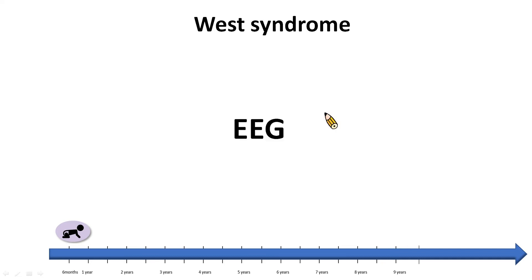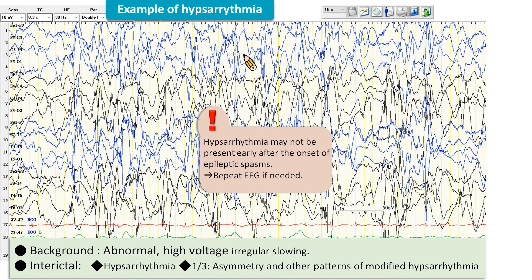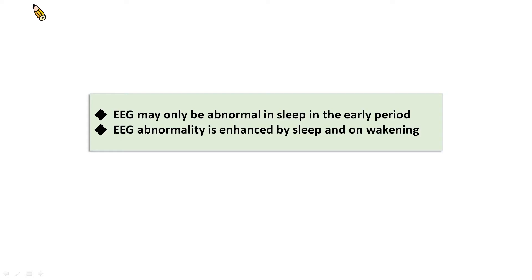Now I am going to show you the EEG reading of West syndrome. This is a 3-month-old with West syndrome. The background EEG, as you can see, is often highly disorganized, with high-voltage irregular slow waves intermixed with multifocal spikes and polyspikes — this is termed hypsarrhythmia. Asymmetry and other patterns of modified hypsarrhythmia occur in about one-third of cases. A word of caution: hypsarrhythmia may not be present early after the onset of epileptic spasms, so repeat EEG if needed. The EEG may only be abnormal in sleep in the early period.